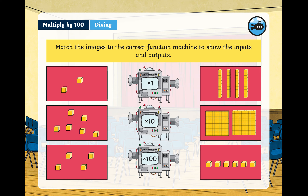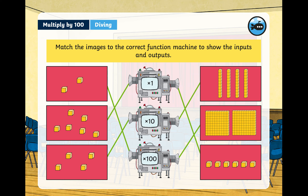The first one is the two cubes — when you put them into the times 100 function machine, your output is 200, so two times 100 equals 200. The second box has six items: six times one gives us six. The last one is four — four times ten is the same as four tens, and that gives us that output.